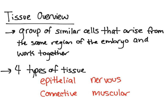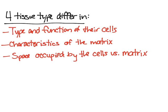You might wonder how these four tissue types differ from each other. The four tissue types differ in the type and function of their cells — for example, epithelial tissue has different types of cells than muscular tissue. They also differ in the characteristics of the matrix. The matrix is essentially everything that isn't the cell, made up of proteins and a gel known as ground substance or extracellular fluid.